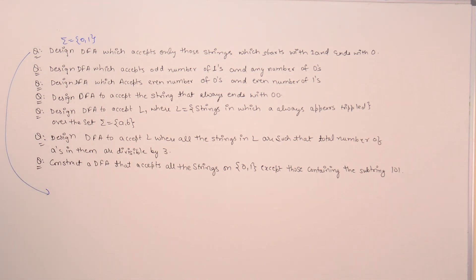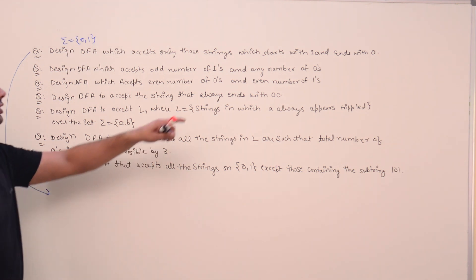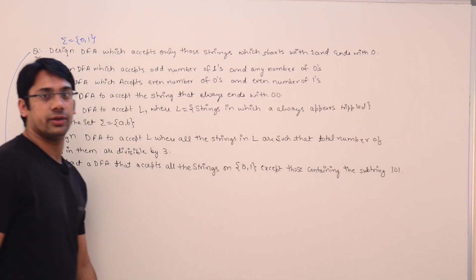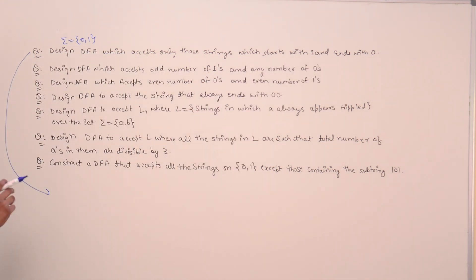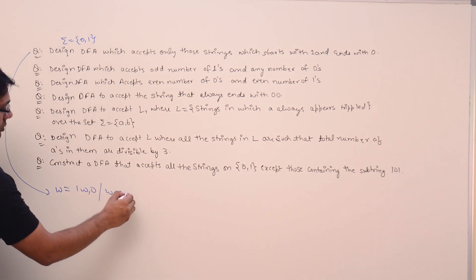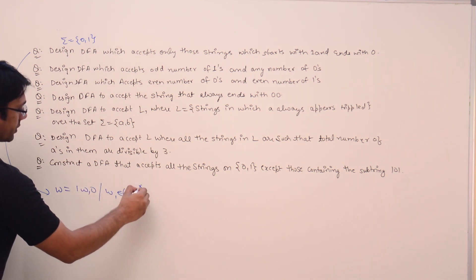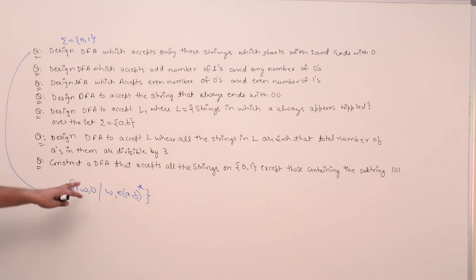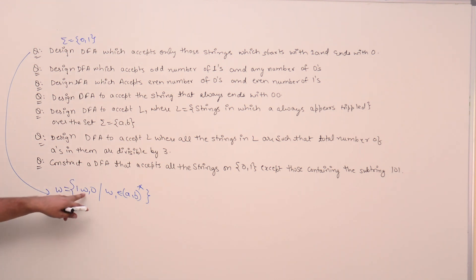We have to design a DFA for strings which start with 1 and end with 0. That means every string w can be written as 1 w1 0, such that w1 belongs to {a, b}*. So every string should start with 1 and end with 0, and this w1 in the middle can be anything. The length of w1 can be 0, 1, 2, 3, 4, and so on.